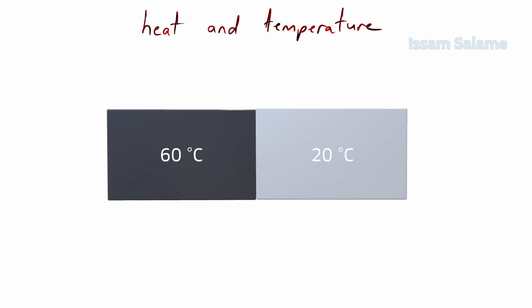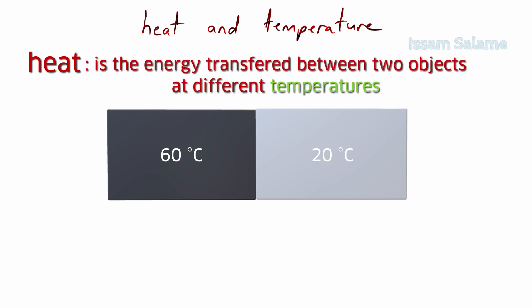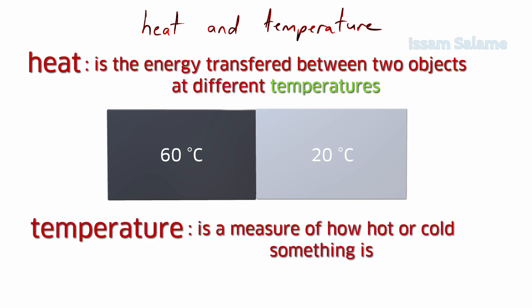So the energy transferred between these two objects with different temperatures is called heat. From now on, the definition for heat is the energy transferred between two objects with different temperatures. But if you want to define temperature, temperature is a measure of how hot or cold something is.